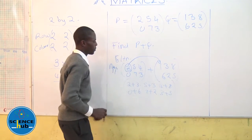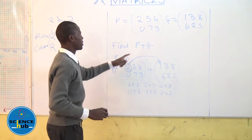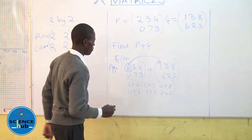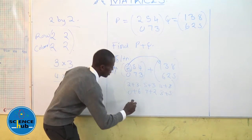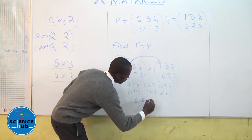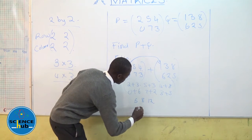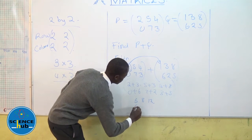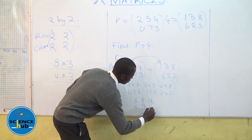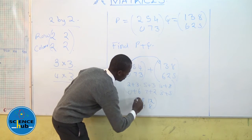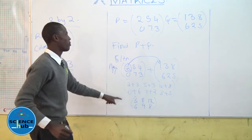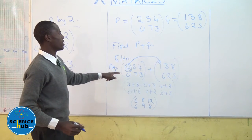So the sum of P plus Q will be given as 5, 8, 12, 6, 9, 9, 8, 9, 8. That will be the sum of P plus Q.